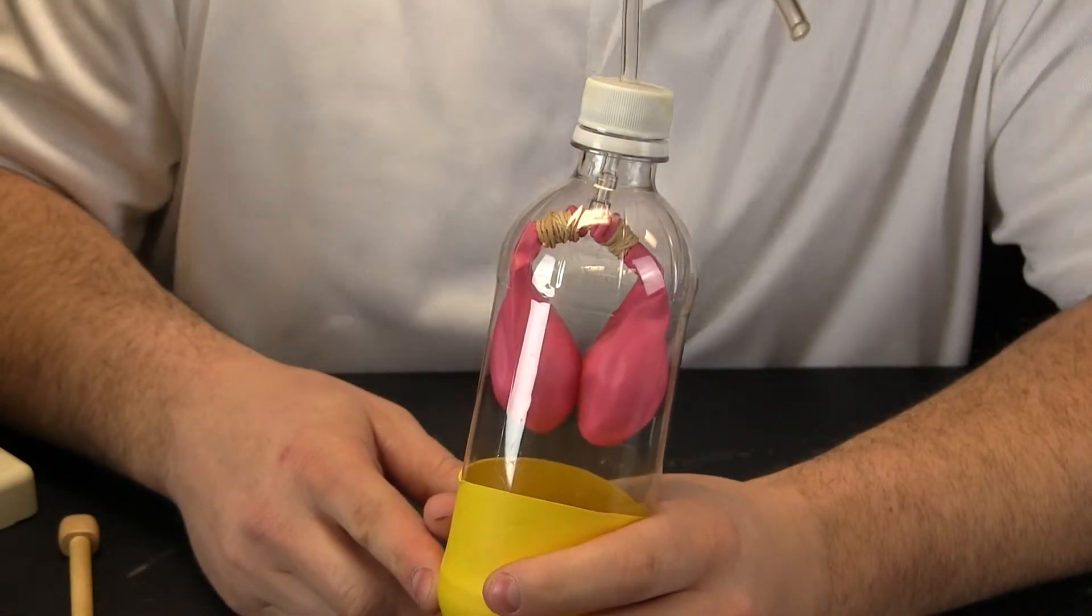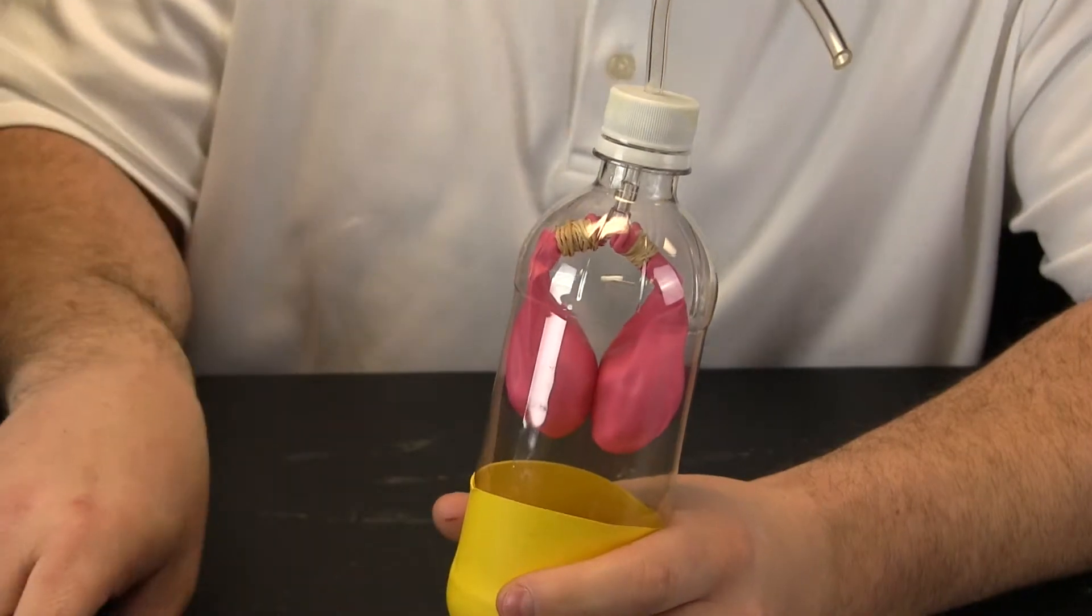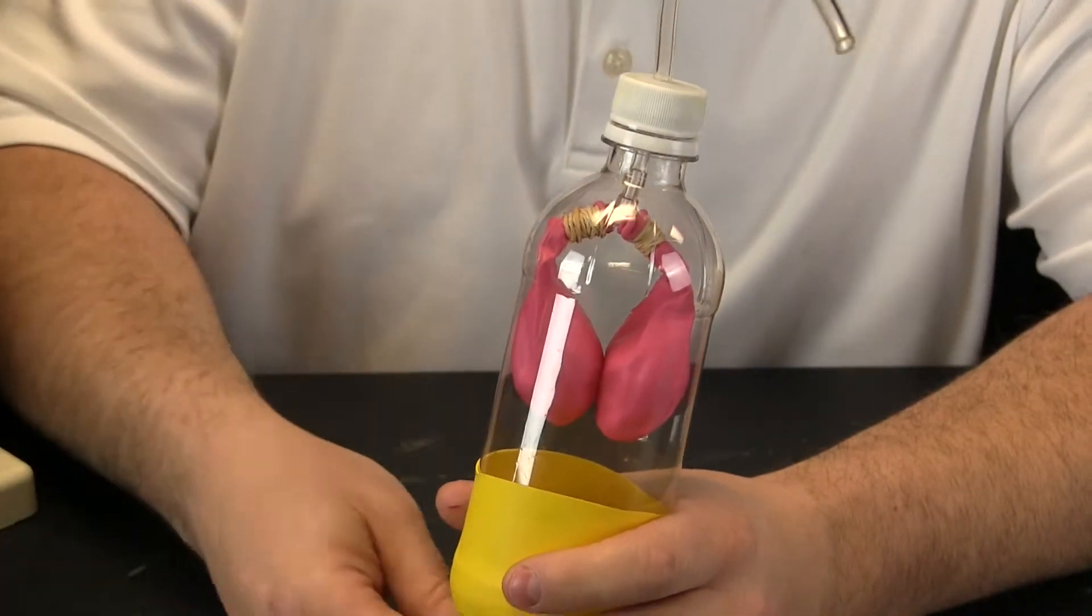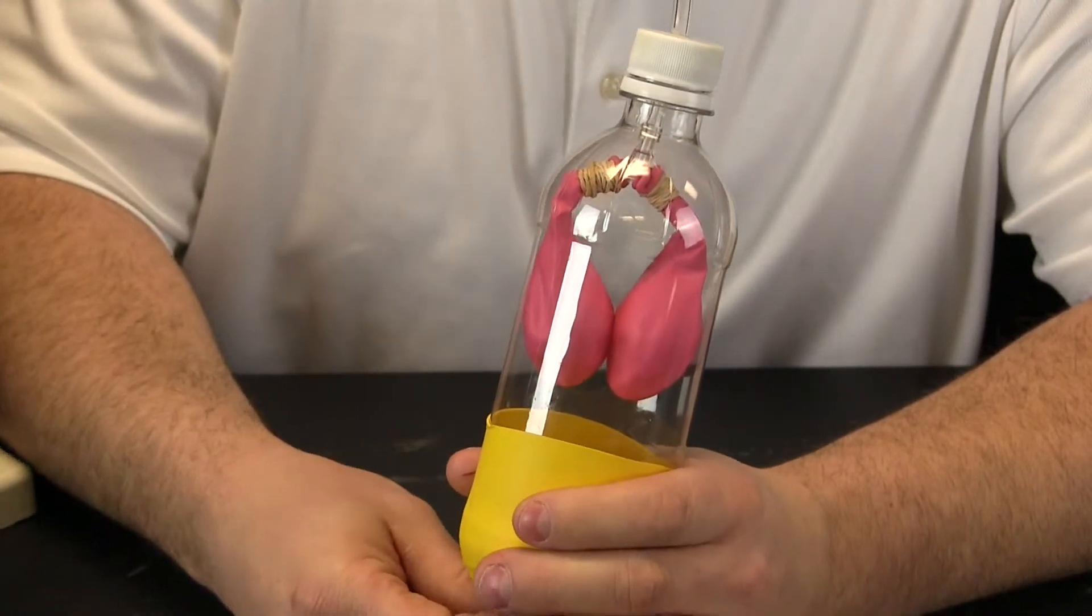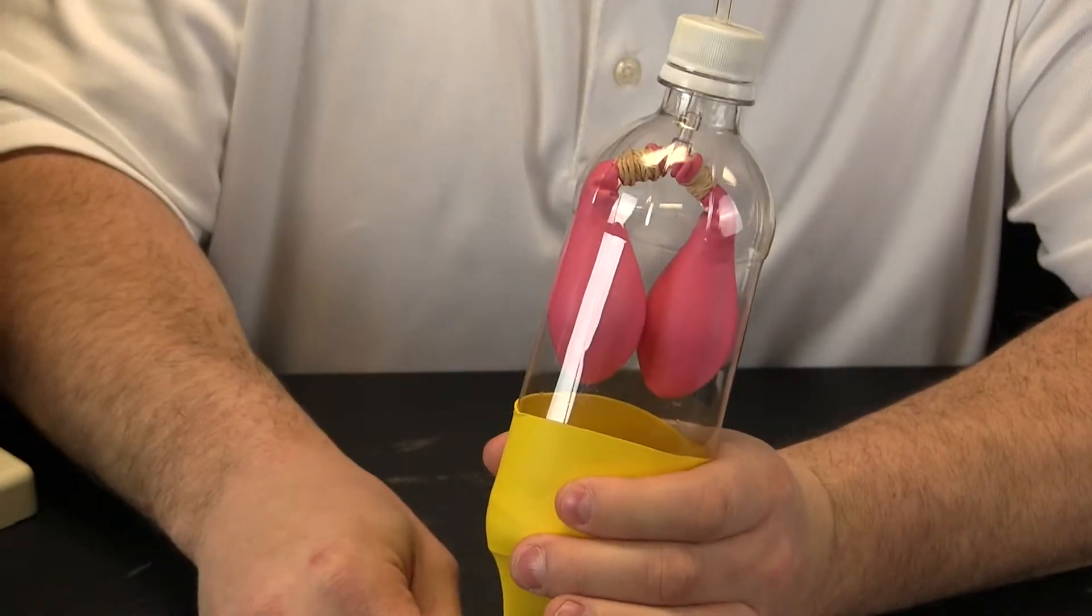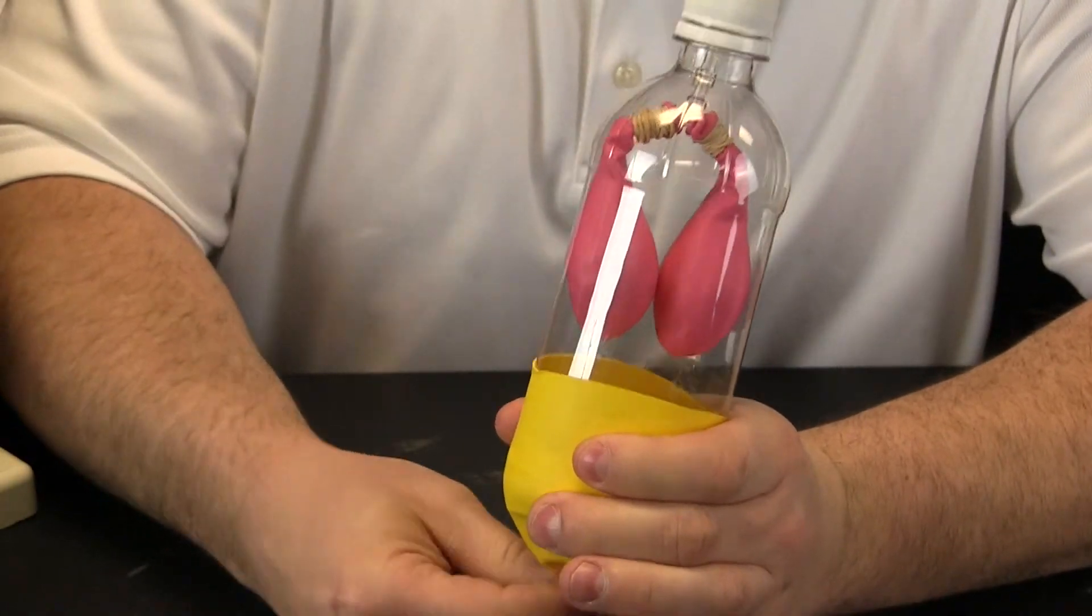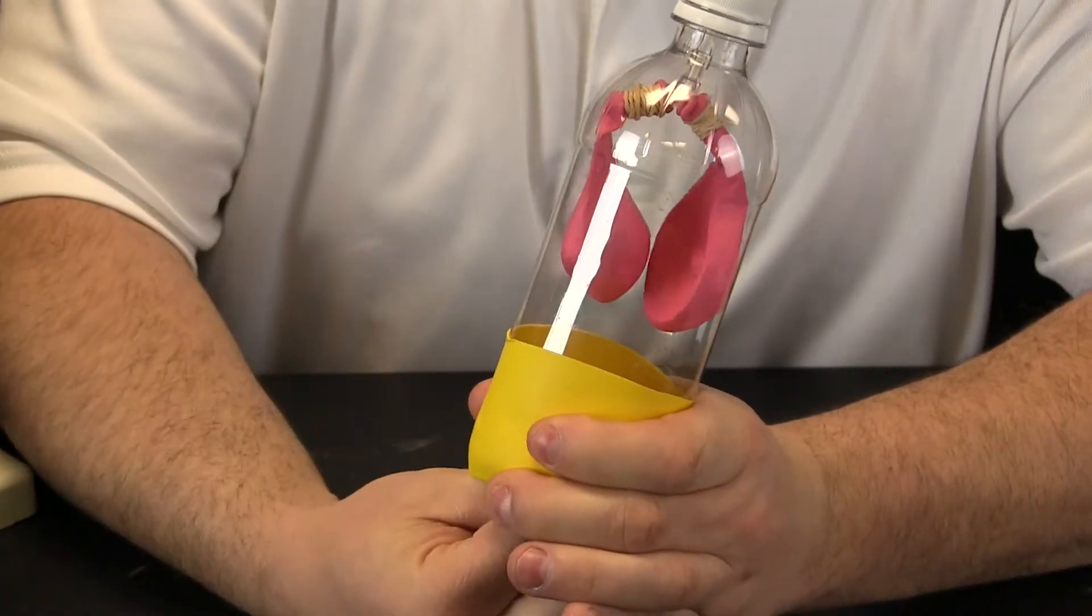We have zoomed in so you can see a very simple model of the lungs. The pink balloons, those are our lungs. And the yellow balloon is actually a special muscle that helps our lungs to work. And as that muscle moves, you can see our lungs work.